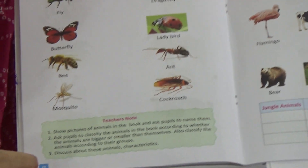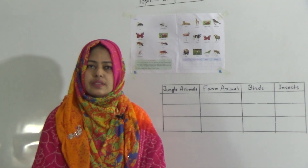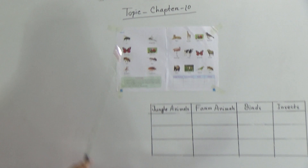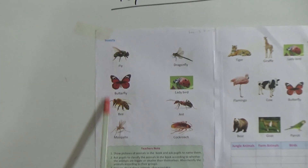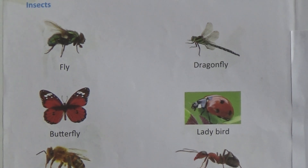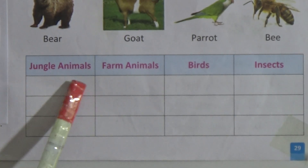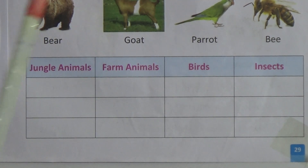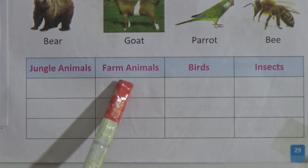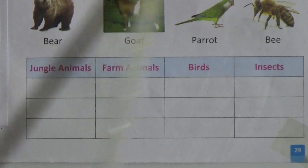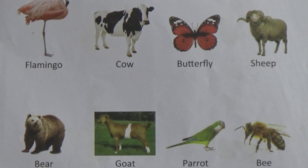This is page number 28 and 29. Dear students, let's start the class. We can see here there are so many insects pictures. Today we will practice their names and spellings, and after that we will do a table. We will list jungle animals, farm animals, birds, and insects — we will separate their names from these pictures. At first we will practice the insect names.